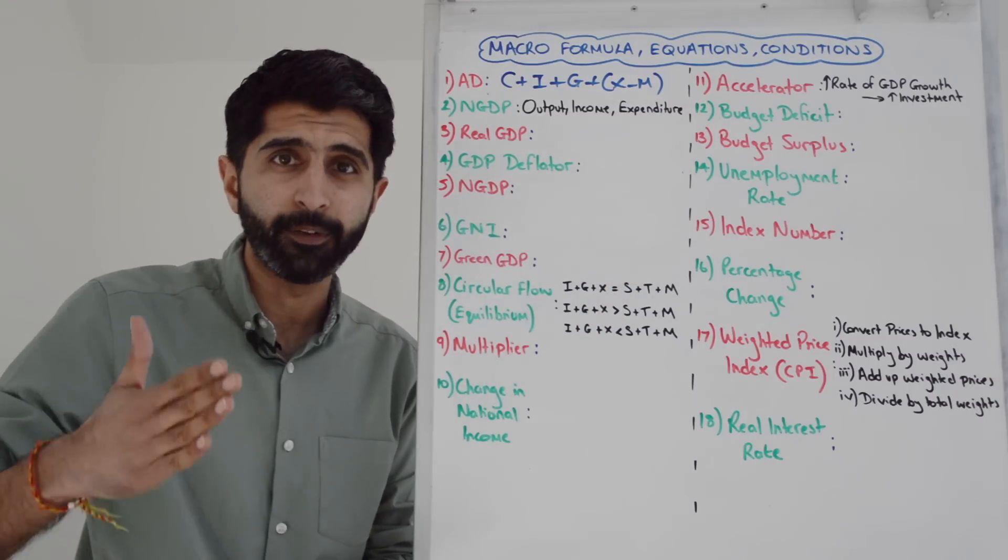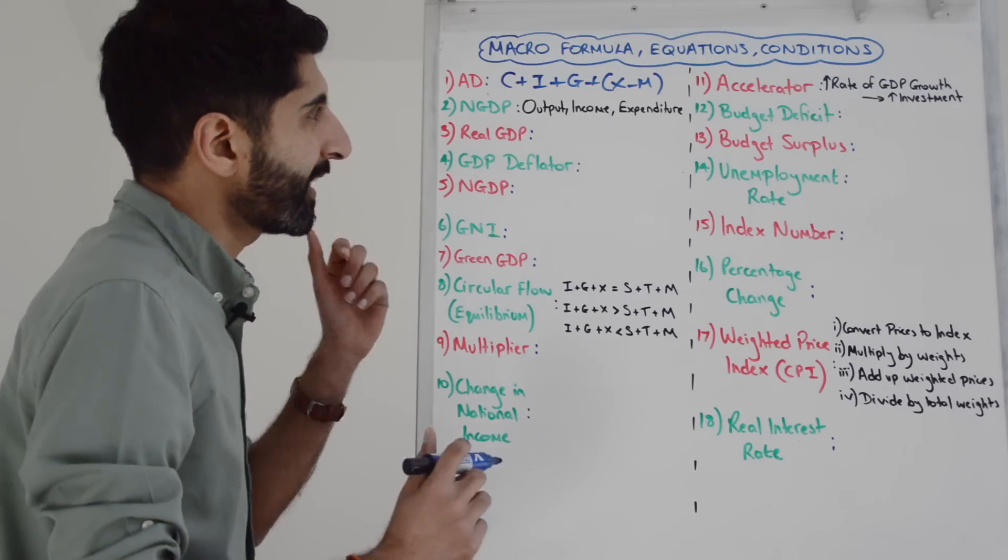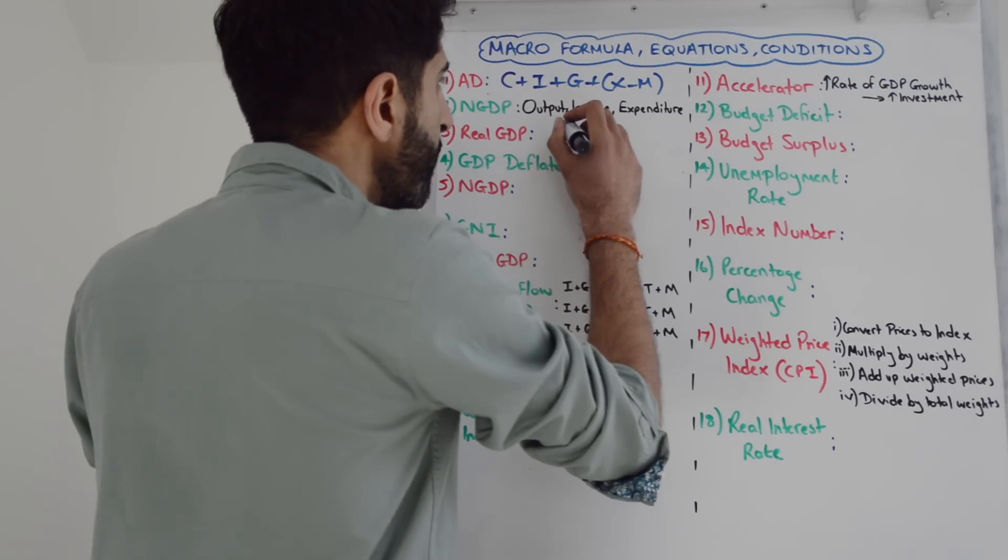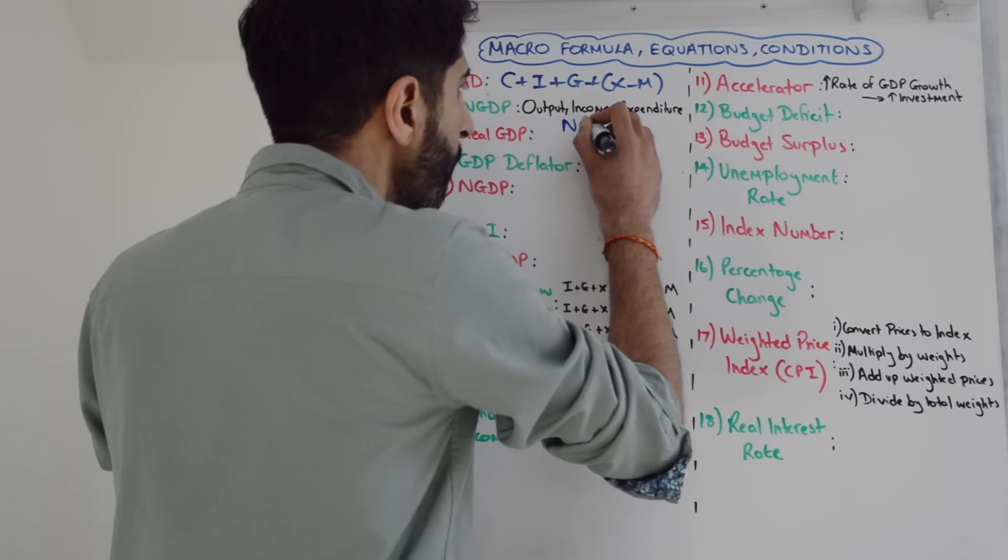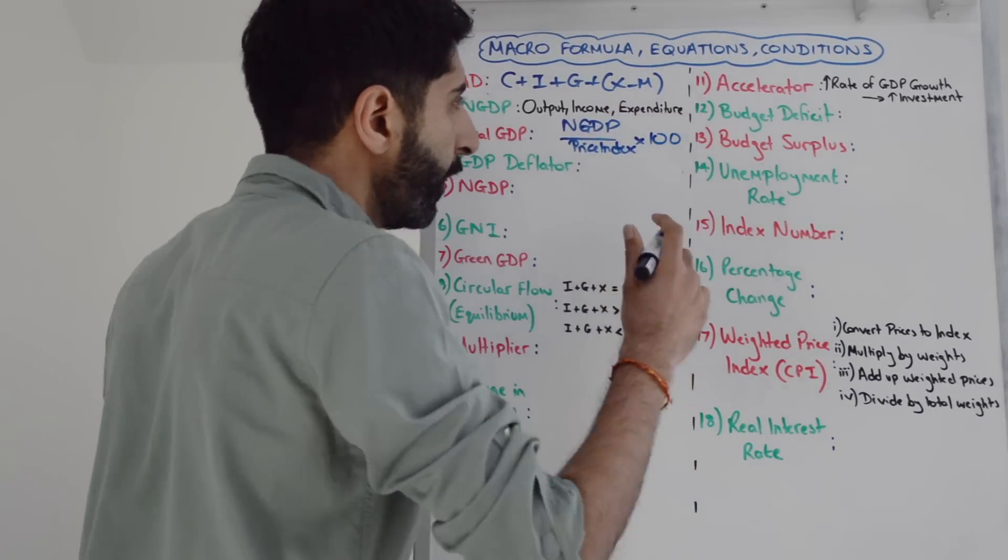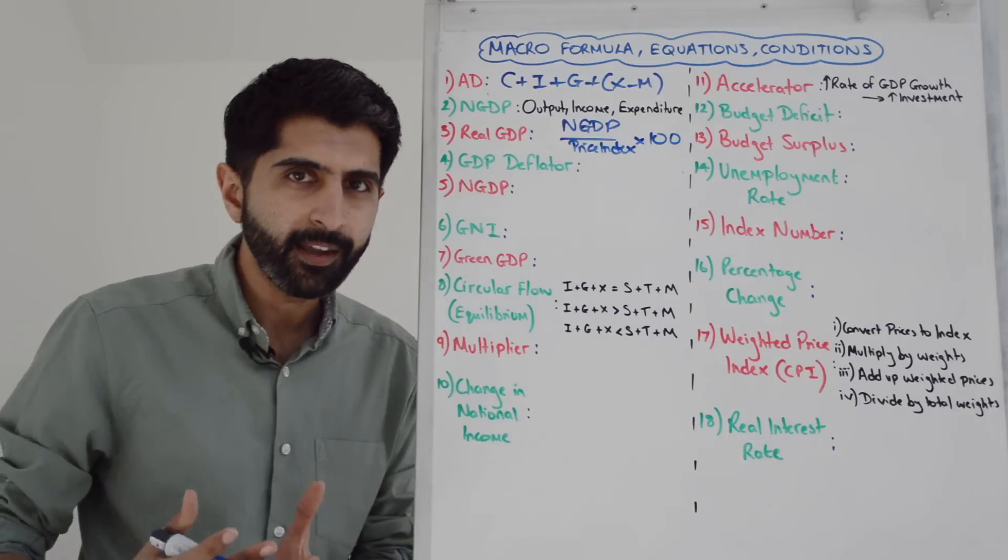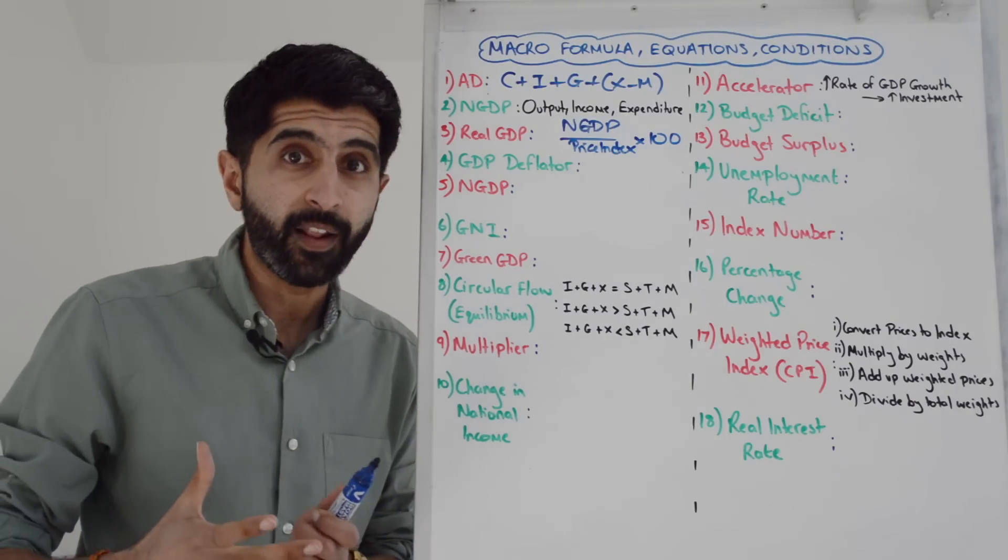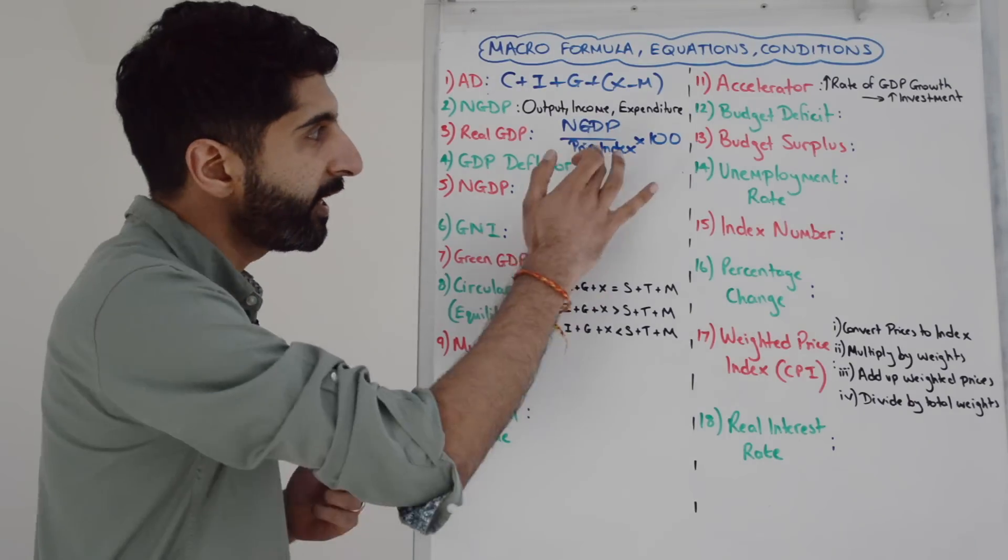The expenditure method is just AD: C plus I plus G plus X minus M. To calculate real GDP, the equation is: take nominal GDP, divide by a price index, then multiply by 100. That price index could be a CPI index or the GDP deflator.